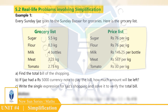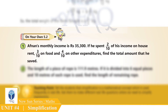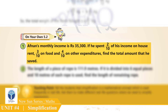Hamara agla topic hai 5.2 Real Life Problems Involving Simplification, Page 79. Hum yahan par simplification ko real life problems mein kaise istemal karte hain seekhenge. Page 80, Question No. 1: Afnan's monthly income is Rs. 35,300. If he spent 2/10 of his income on house rent, 3/10 on food, and 4/10 on other expenditures, find the total amount that he saved.